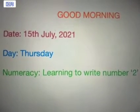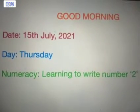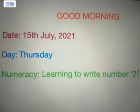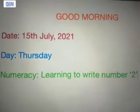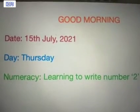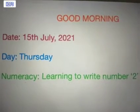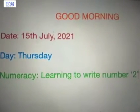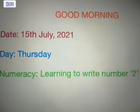Good morning children. Today's date is 15th of July and the year is 2021. Today's day is Thursday and in our numeracy class today we will be learning how to write number 2.